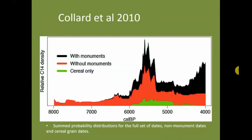This is a slide from the Collard et al. paper in 2010, which you may or may not have seen. While Bayesian analyses tend to be published in archaeological literature, this kind of summed probability work tends to go into Nature or more science publications and doesn't go through the same archaeological peer review. You can see that while they put all the dates together, they have still made theoretical steps in deciding what is a monument and what isn't — showing where there are monuments, what the dates without monuments are, and the cereal data only. There is still an interpretation coming in.